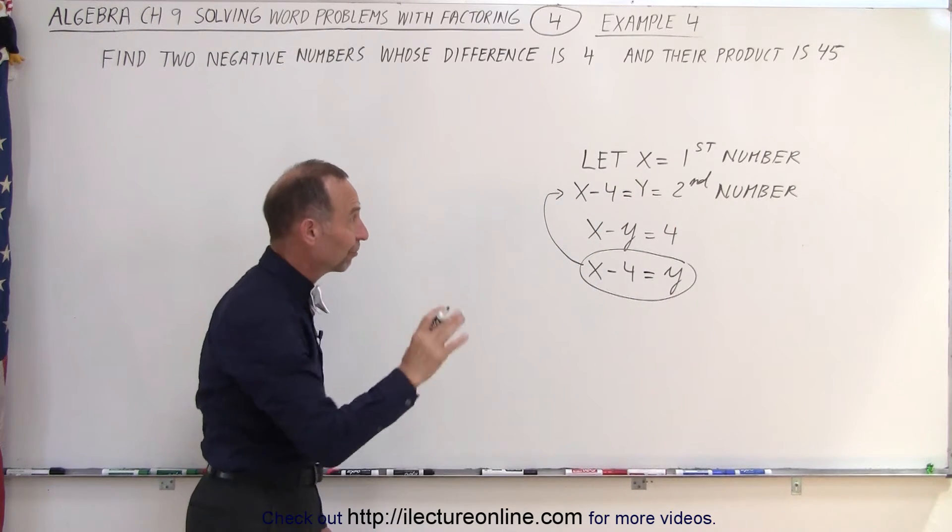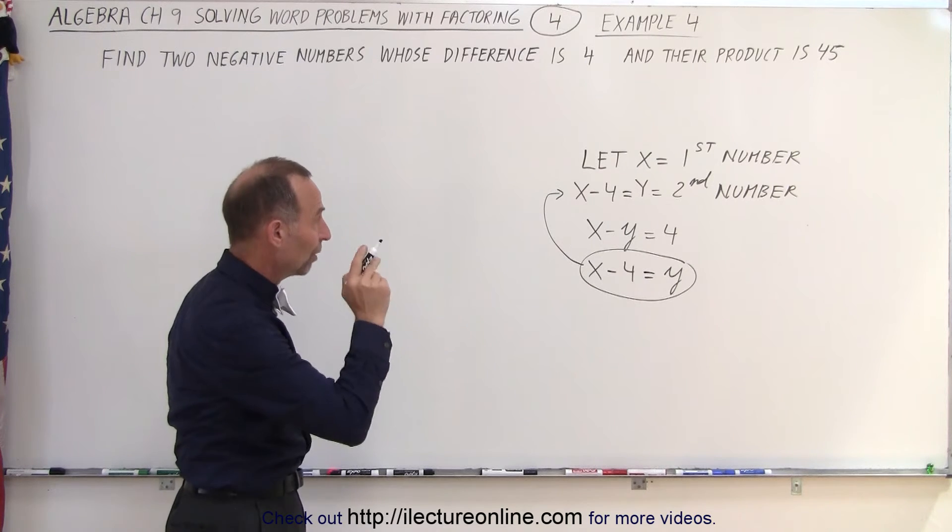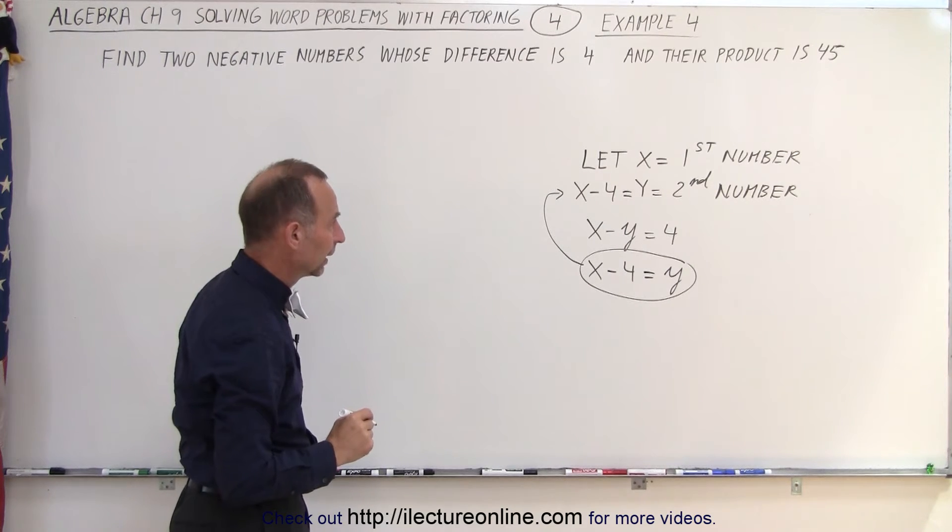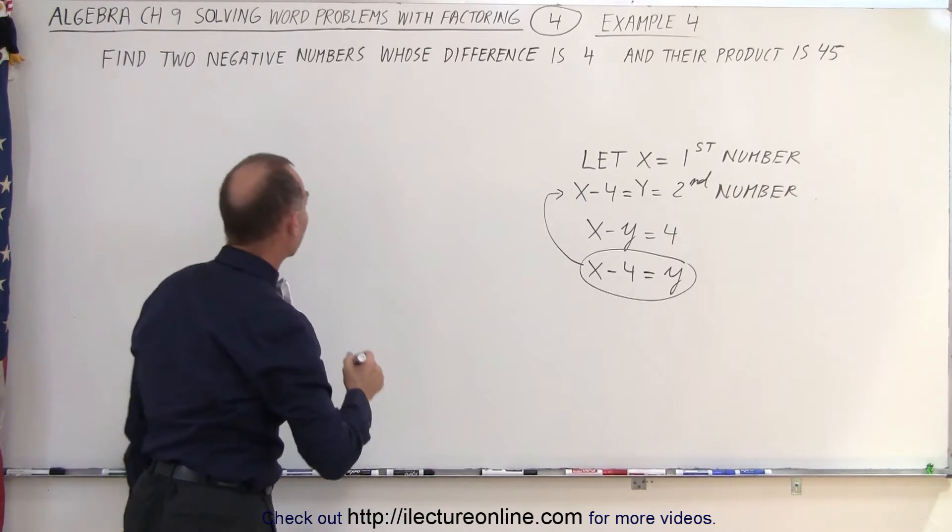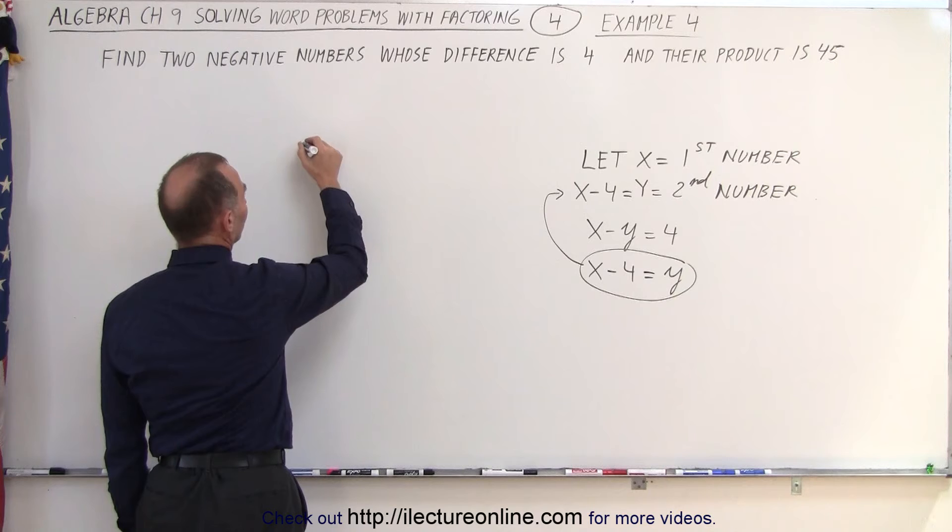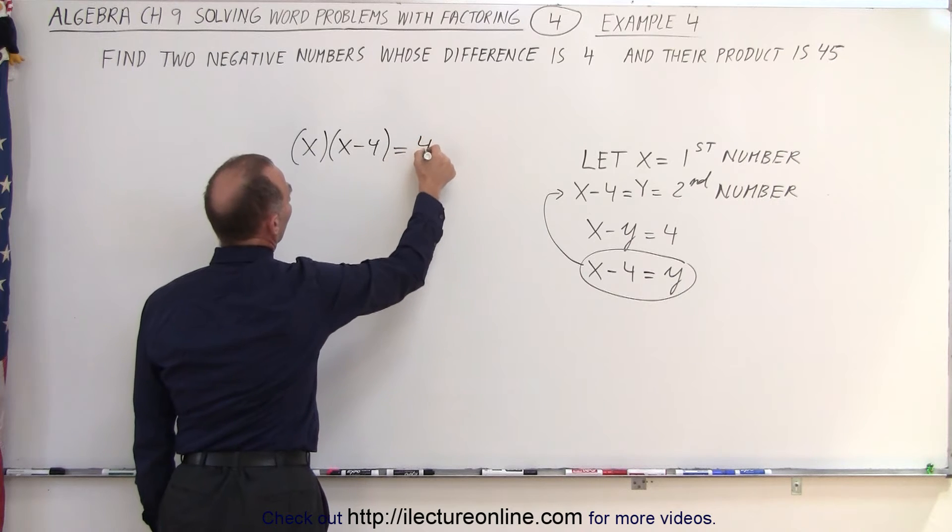So now I have the first number and the second number expressed in terms of x, one variable only. Now next, they tell us that the product is equal to 45. That means that the first number, which is x, times the second number, which is x minus 4, must equal 45.